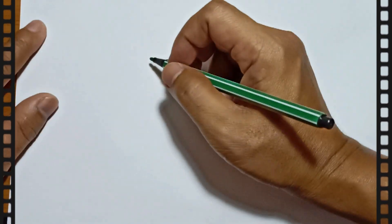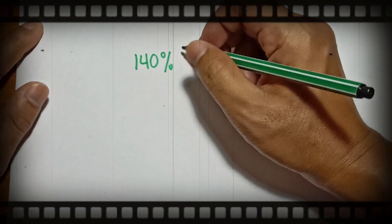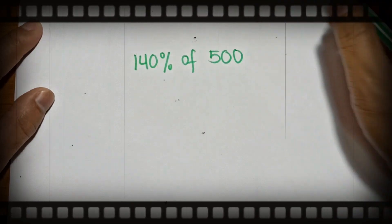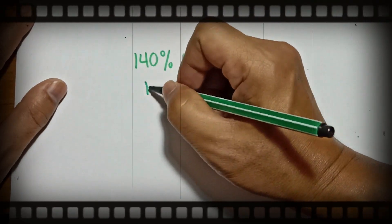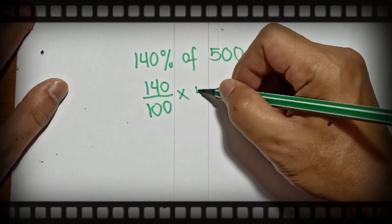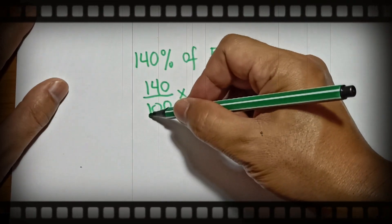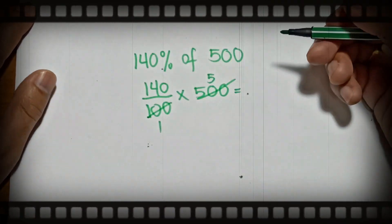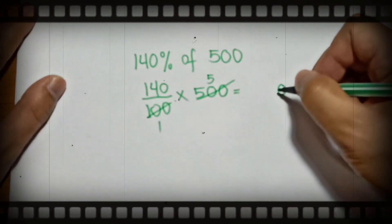For the last example: what is 140 percent of 500? All you have to do is 140 over 100 times 500. You can cancel, leaving 1 and 5, so what is 140 times 5? 5 times 0 is 0, 5 times 4 is 20 — carry...